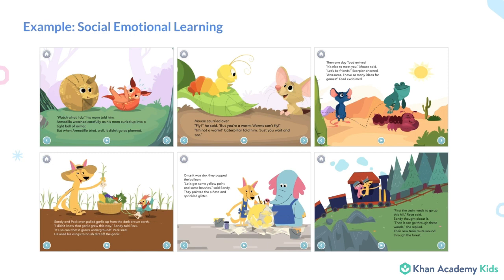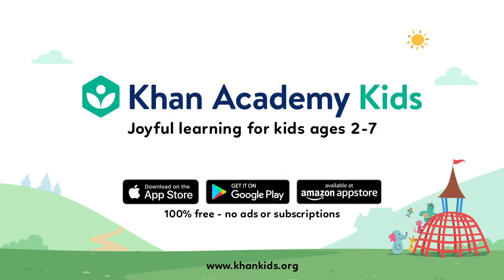We have a story about a mouse who feels left out when his friend Scorpion makes a new friend. Hopefully that gives you an idea of how we think about harnessing the power of technology to extend learning experiences for young children. If you'd like to try some of these activities, you can find Khan Academy Kids on the App Stores. Thanks!